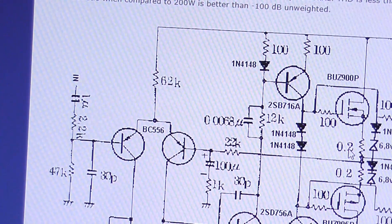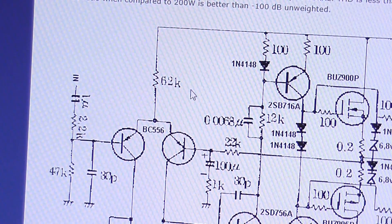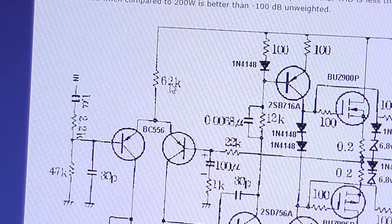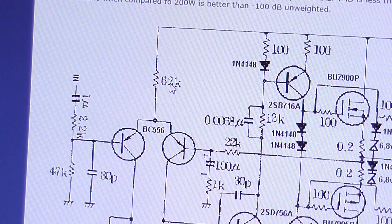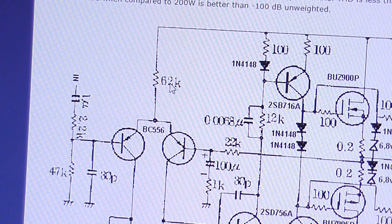Now the original input stage is BC556 funnily enough and I've played with the value of this resistor which was 62k. I originally started at 68, didn't make any difference. Reduced it to 47 didn't make any difference. Currently it's now 56.